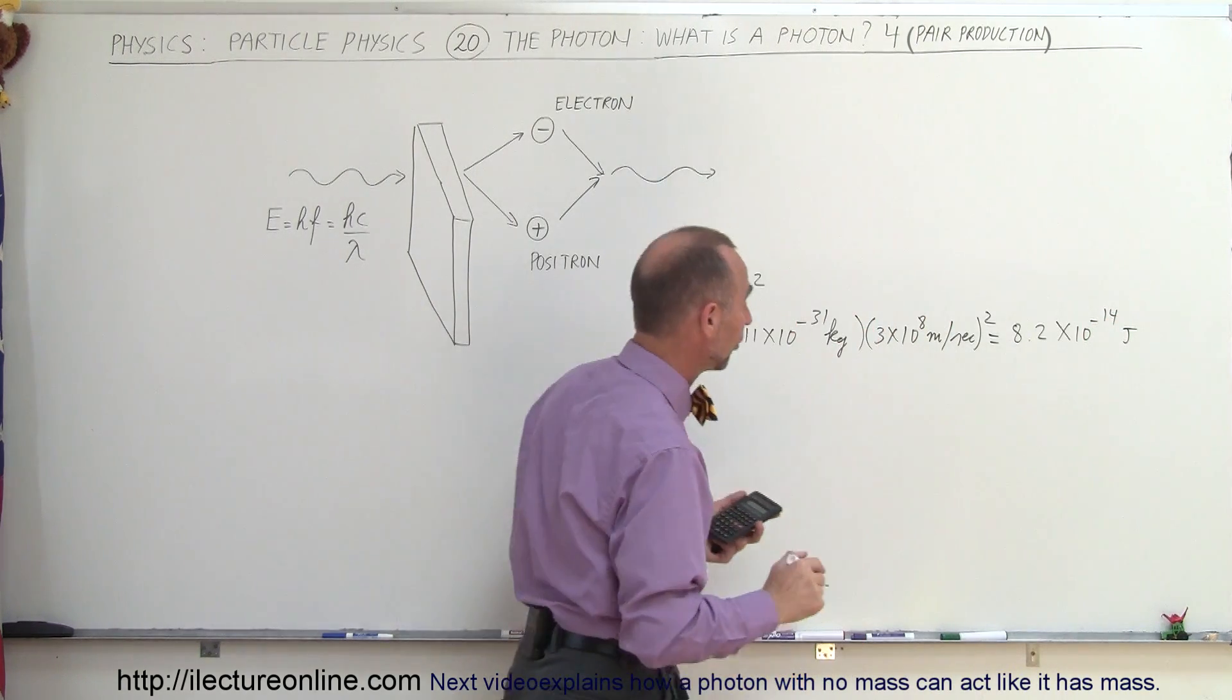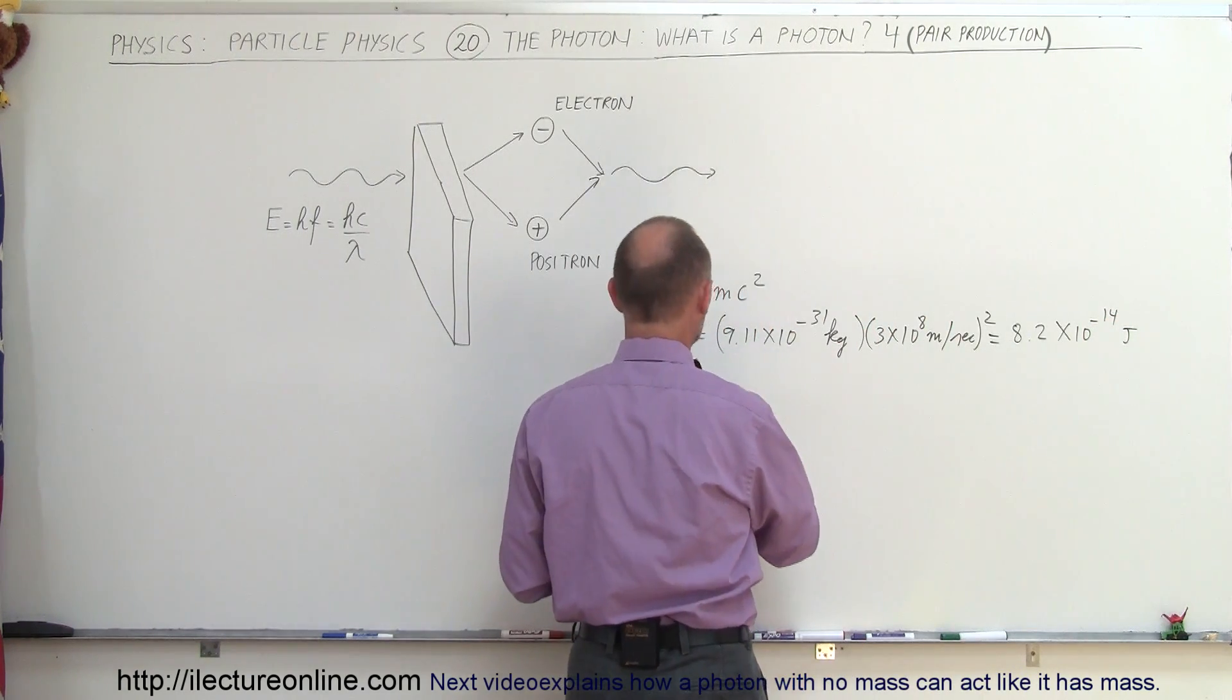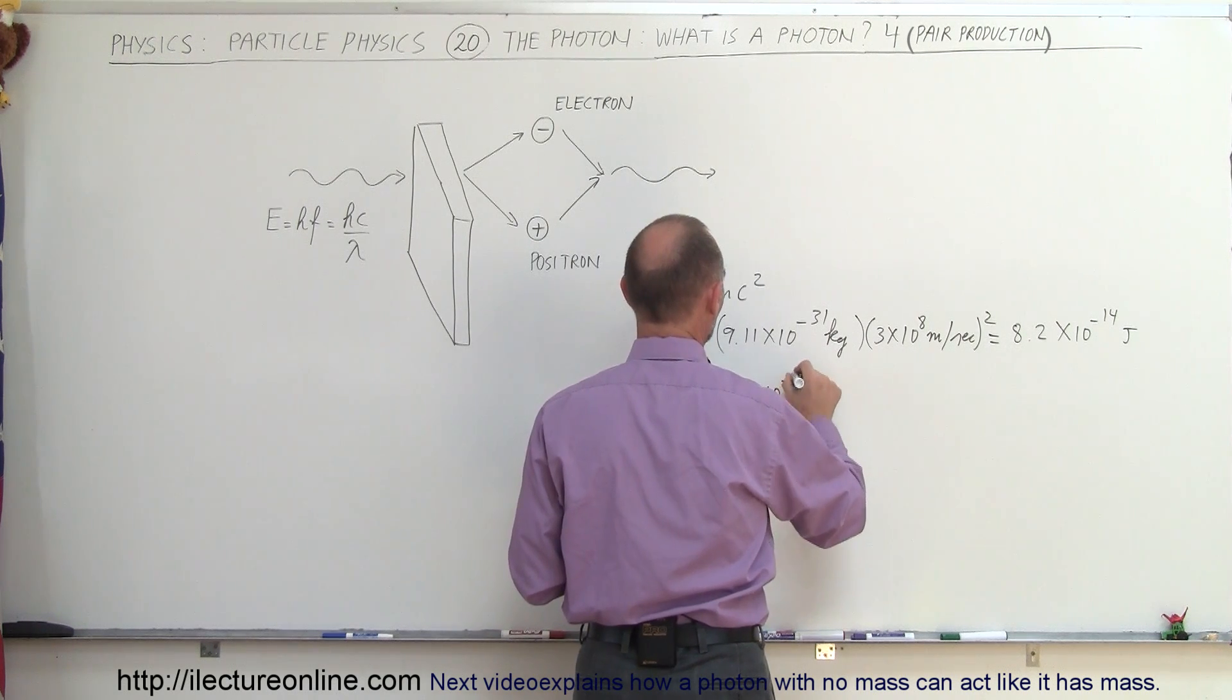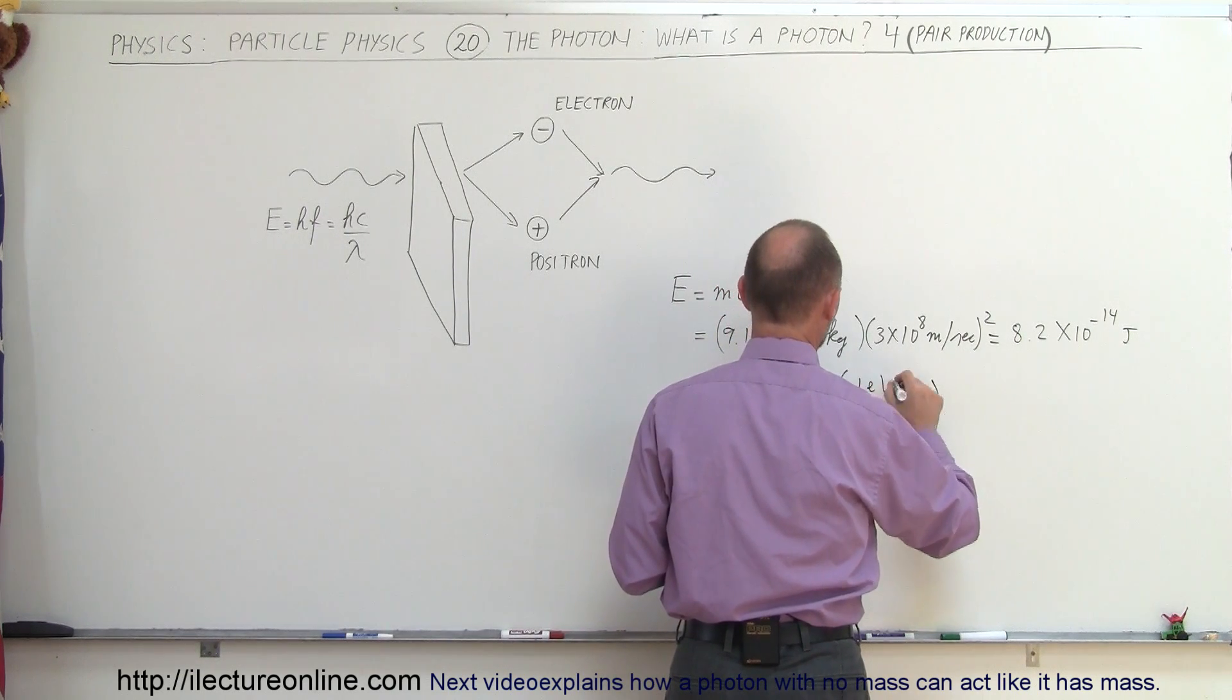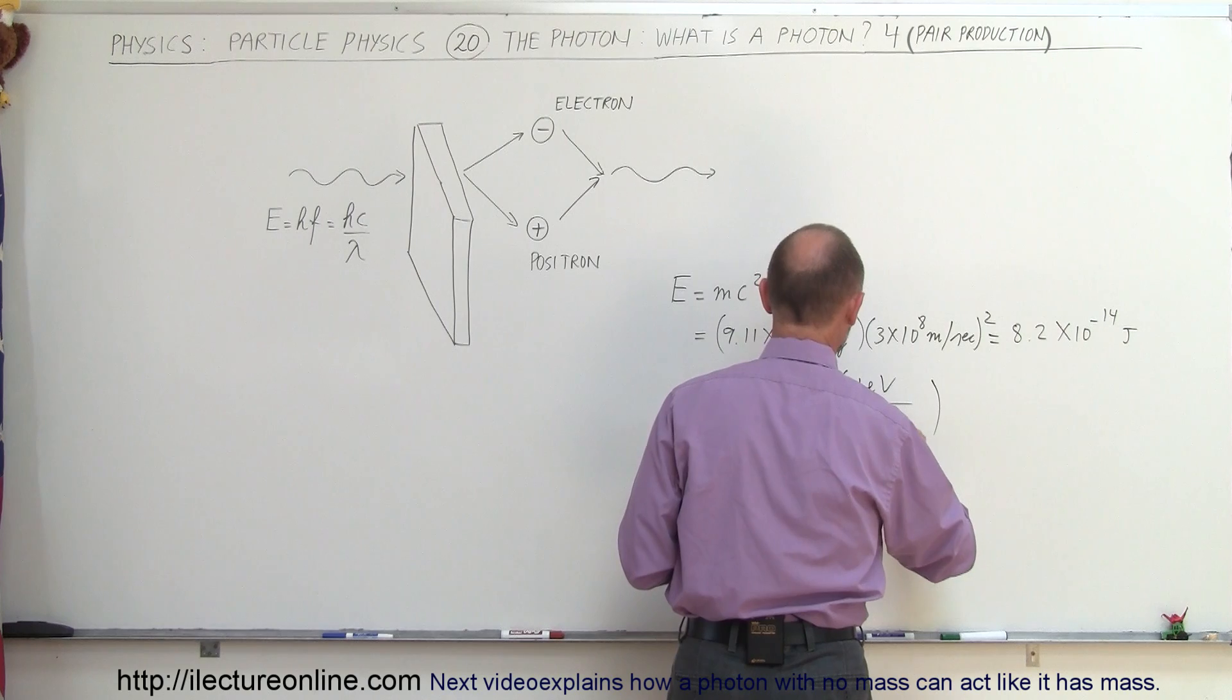Now let's convert that to electron volts. So of course, to convert to electron volts, that would be equal to 8.2 times 10 to the minus 14 joules, and multiply that times 1 electron volt divided by 1.602...